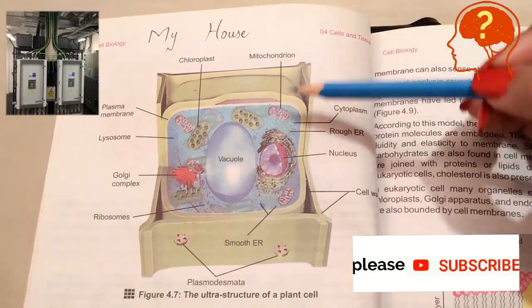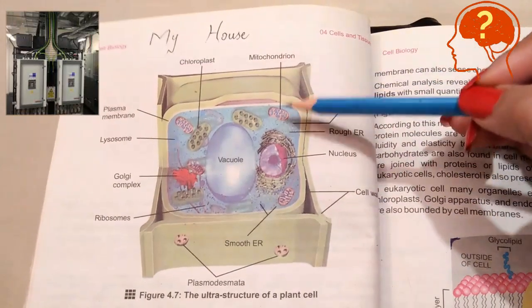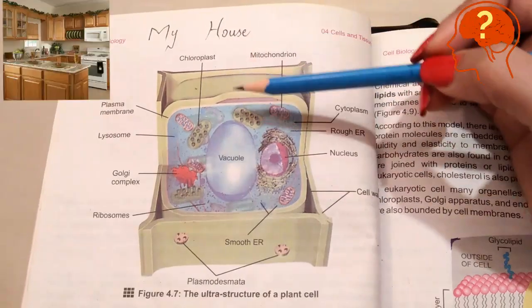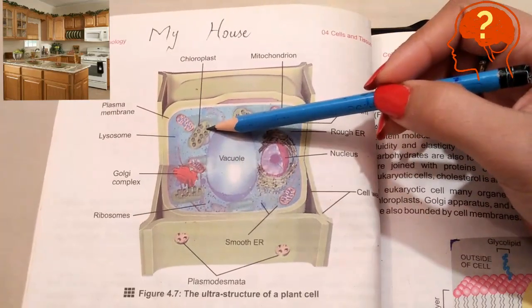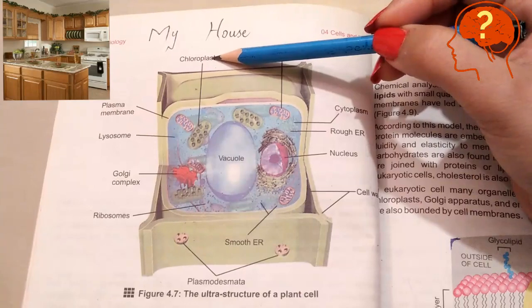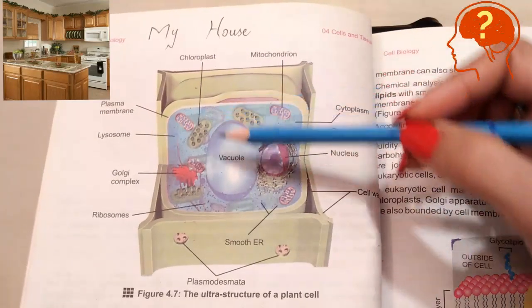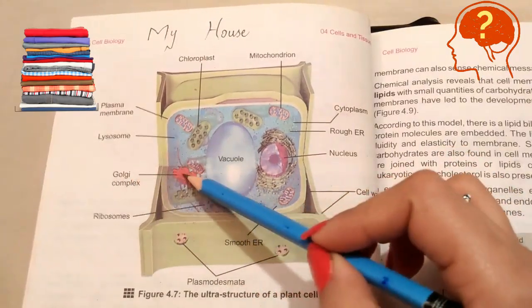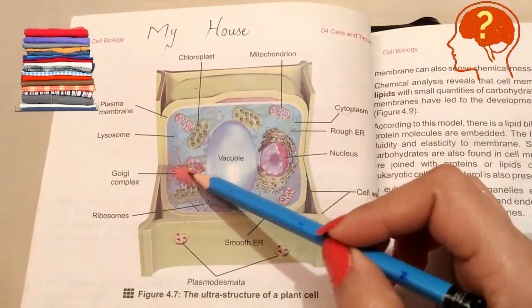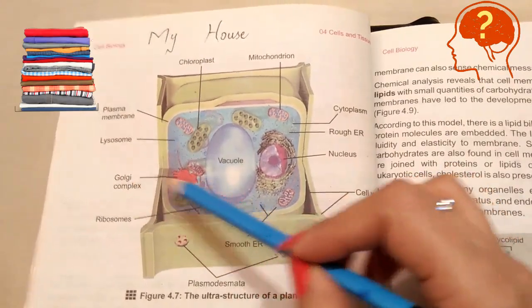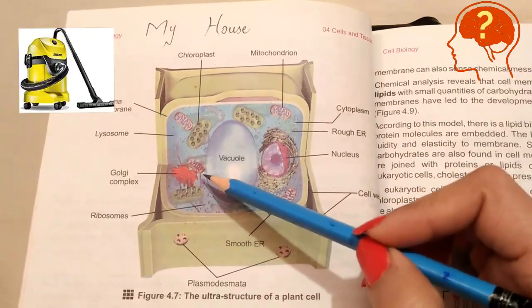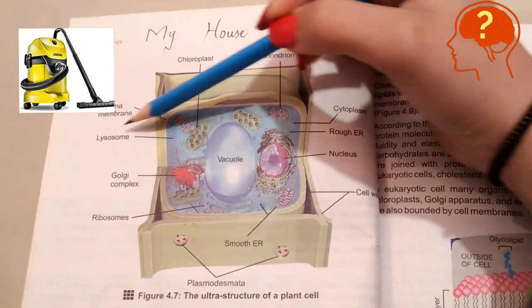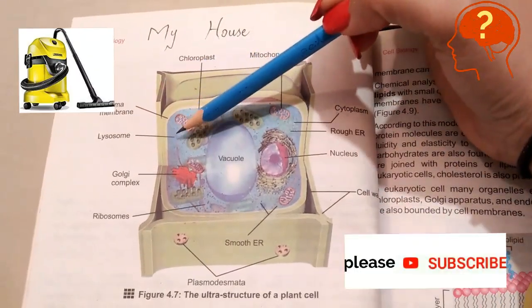There are some other rooms in your house: there is a smaller room which is the switchboard area — compare it with the mitochondria because it is the powerhouse of the cell. There is a kitchen — compare it with the chloroplast because chloroplast is the food factory of the plant. There is a washing area — compare it with the Golgi complex, like folded dresses. For cleaning your house there are vacuum cleaners — compare these small circles with the lysosomes because lysosomes also act as cleaners of the cell.